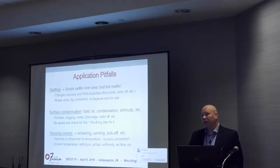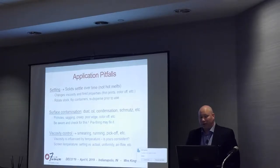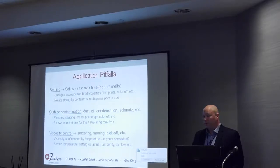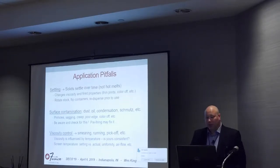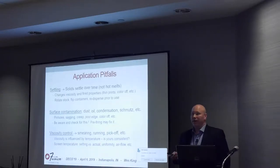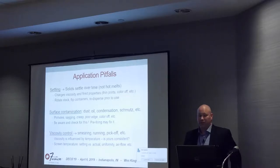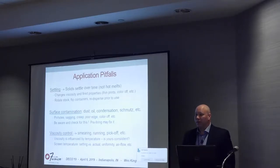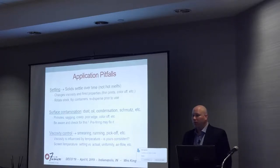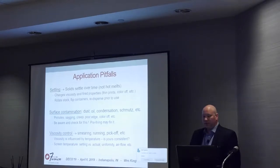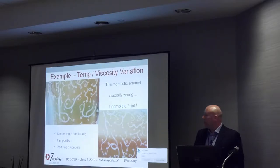Viscosity control is very important. You can run into smearing, you can get runs if your spray viscosity is too low, and you can have pick-off if you're doing multi-color thermoplastics. Viscosity is influenced by temperature, so one of the first questions to ask when you're having production problems is: is your viscosity and temperature consistent? This is one of the primary variations we see. For thermoplastics in particular, you've got the setting you use to control the process, but what does that actually mean in terms of temperature? How uniform is it? You can have a 50-degree difference from one side of the screen to the other, and that could cause a big problem.